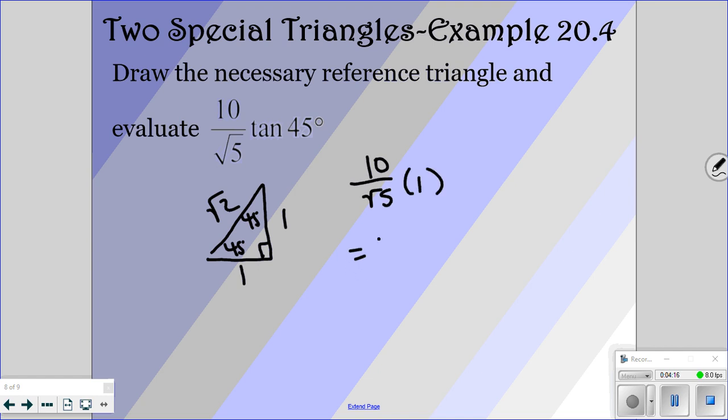And so we have 10 over square root of 5, which we have to rationalize. So multiply by square root of 5 over square root of 5. So I get 10 square roots of 5 over 5. 10 over 5 reduces to 2, so I have 2 square roots of 5. And so that's my answer for that one.